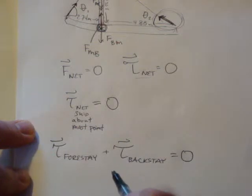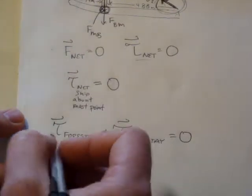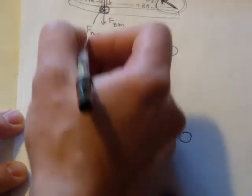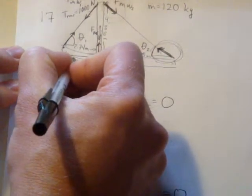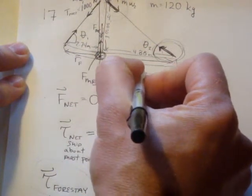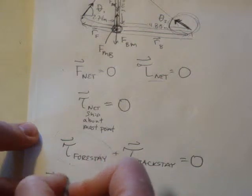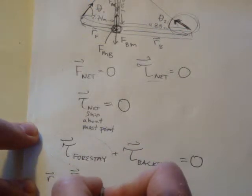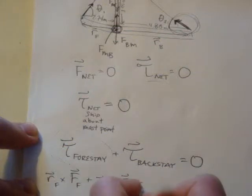Okay, so we have, what is that going to give us? So we have the torque due to the forestay is simply its lever arm. It's its lever arm, RF, let's call that. And the lever arm for the backstay is RB. And so we have RF cross FF, that's the force of the forestay, plus RB cross FB, which is the thing we want to know. And that's going to be equal to zero.